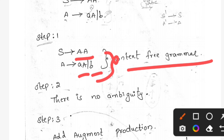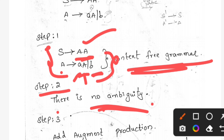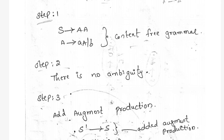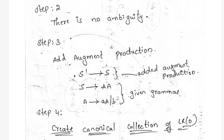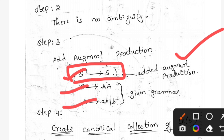With these production rules, we cannot create more than one parse tree, so there is no ambiguity — that is step two. For step three, the production rules start with S, so we write S' → S as the augmented production. We add this as the augmented production rule, and the remaining given production rules stay as they are.